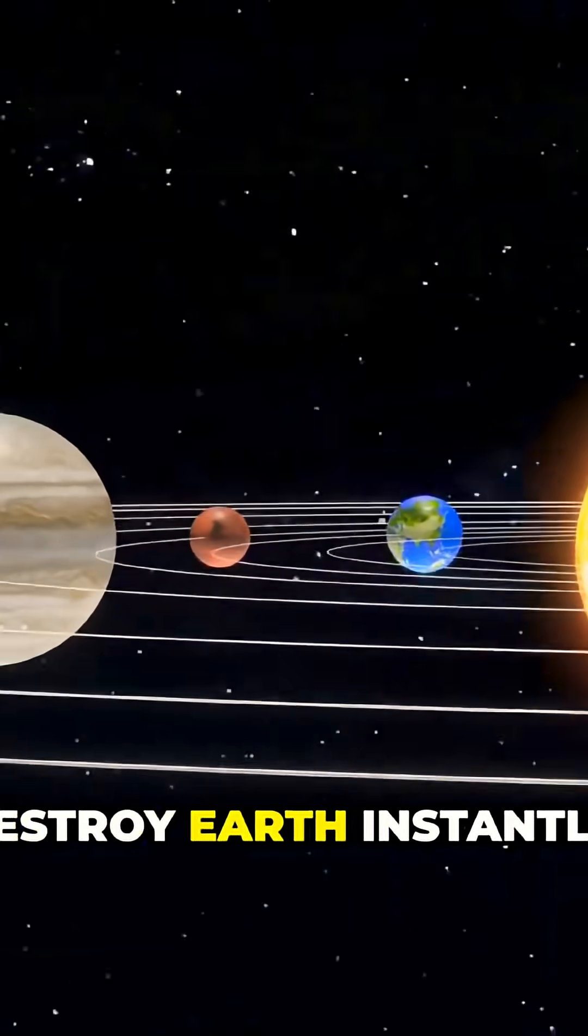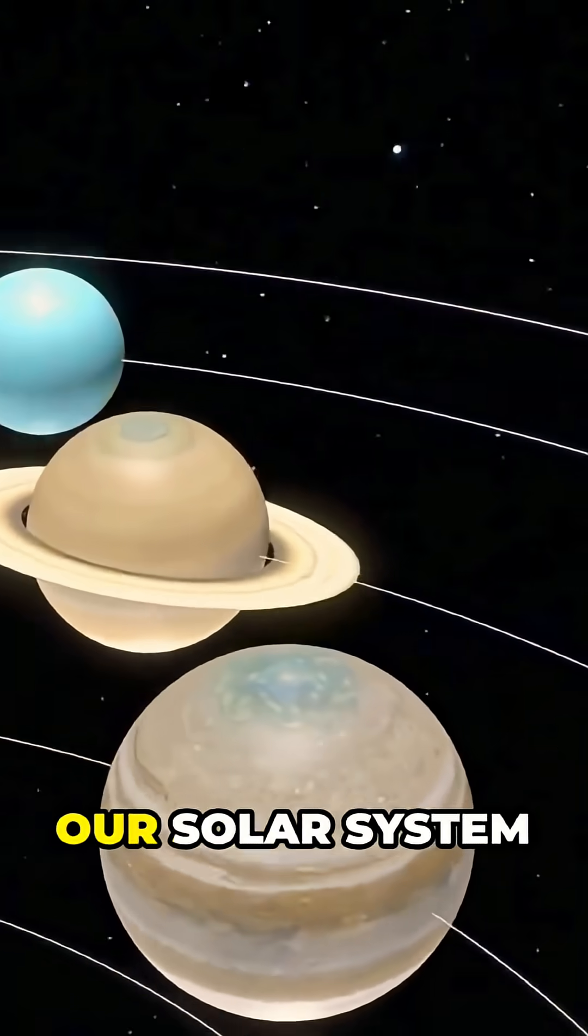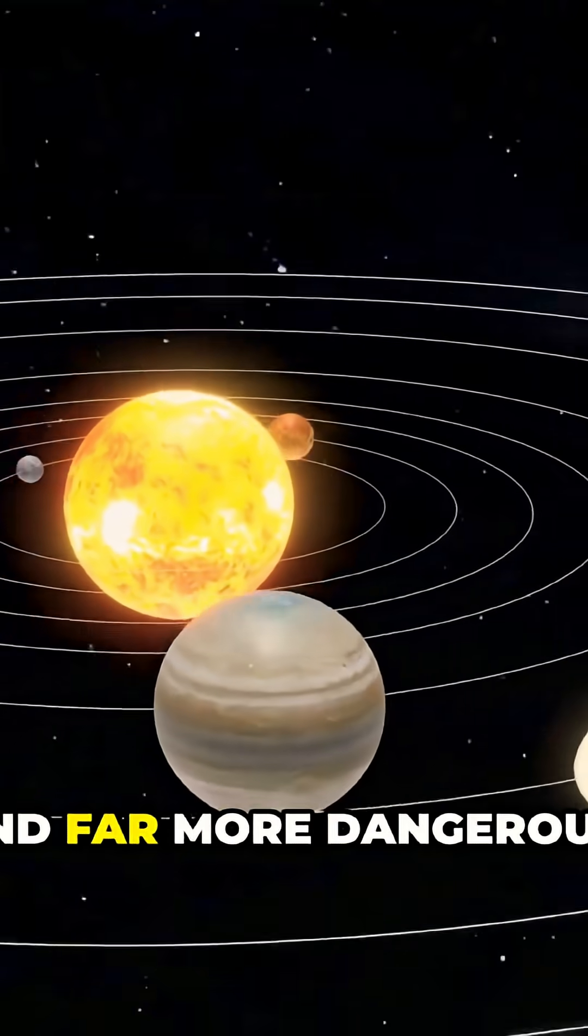Removing the other planets wouldn't destroy Earth instantly, but it would make our solar system less stable and far more dangerous.